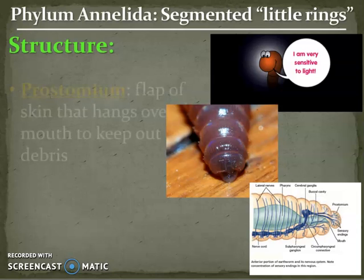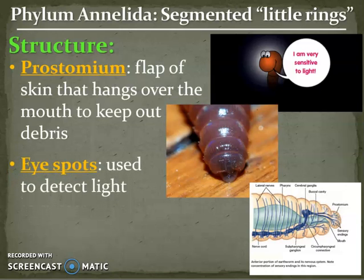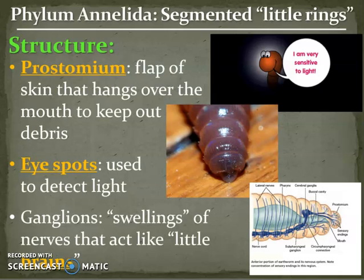Another structure to note is called the prostomium. This is a flap of skin that hangs over top of the mouth. Because worms wiggle through all sorts of things, this prostomium helps to cover the mouth and keep out any debris. Our annelids also have eyespots used for detecting light, not for seeing images. They even have brain-like structures called ganglions, which are a whole bunch of nerves grouped together that act like little brains.